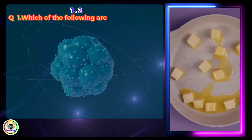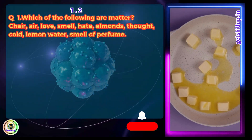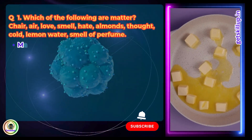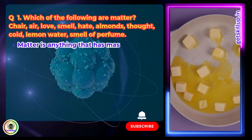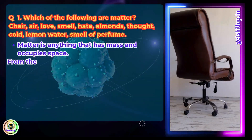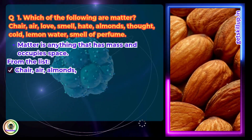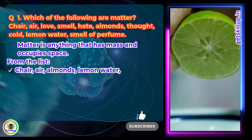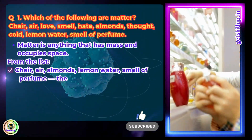Question 1: Which of the following are matter? Matter is anything that has mass and occupies space. From the list — chair, air, almonds, lemon water, smell of perfume — these are matter.